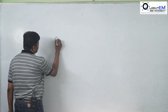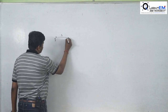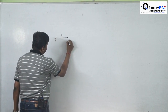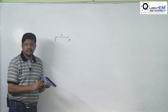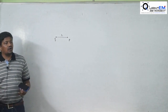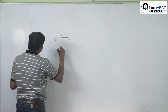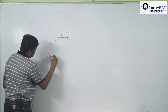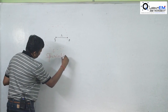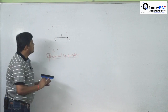Say we have a point charge Q. At a distance r, we have to find the electric field intensity at point P. Step 1: Draw a Gaussian surface passing through point P. Since the source is a point charge, the Gaussian surface is spherical.